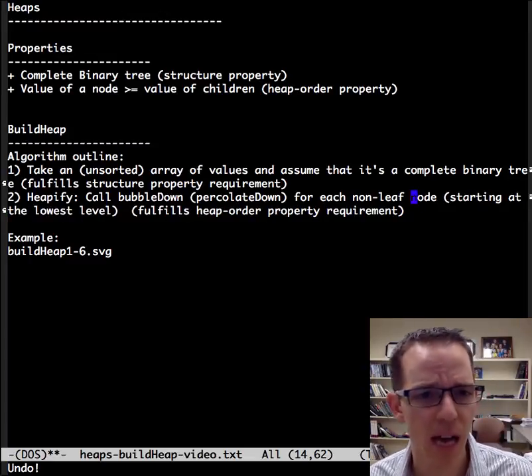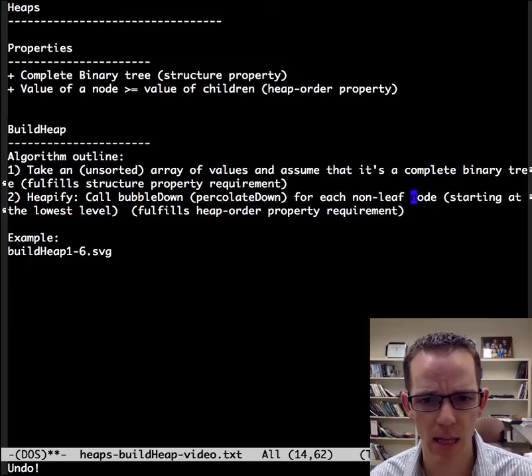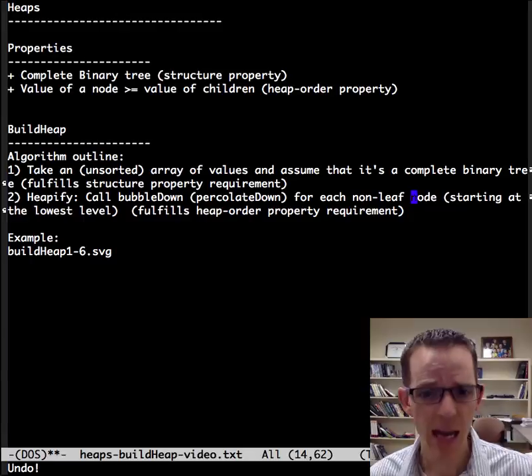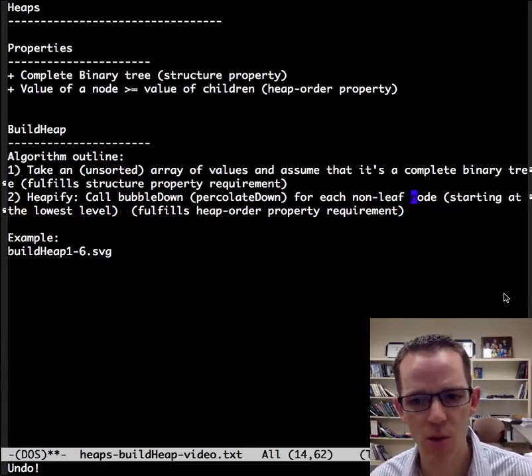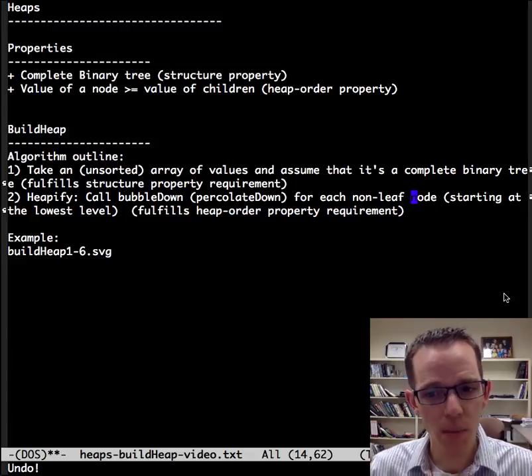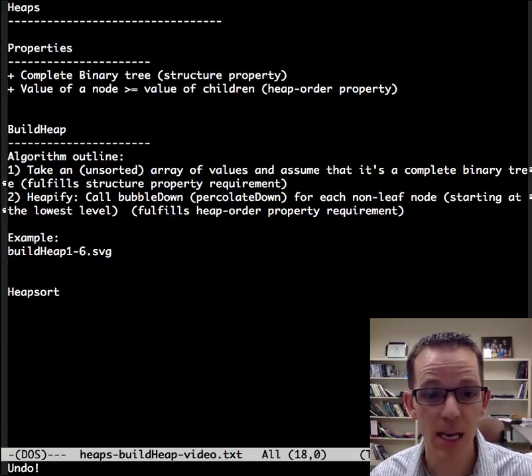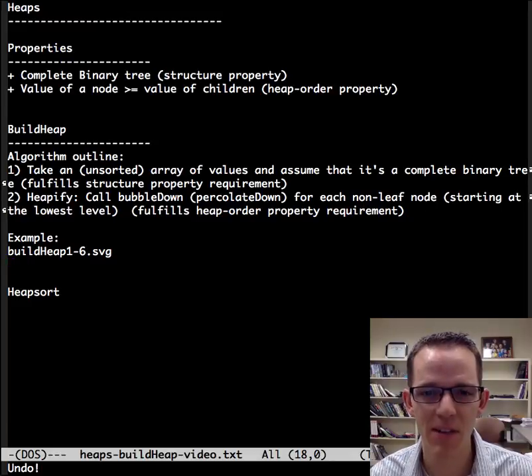So we could change heapify to call bubble down for each non-leaf node. Or if you're going to implement this, you could start at the midpoint, n divided by 2, okay? And now that we have a fast and easy, order n, method to transform an unsorted array into a heap, and it's really fast and easy, order one, to get the largest value, we could combine these two to make an efficient sorting algorithm. This algorithm would be called heap sort, and it is called. And it will be detailed in another video. That's it for this video.